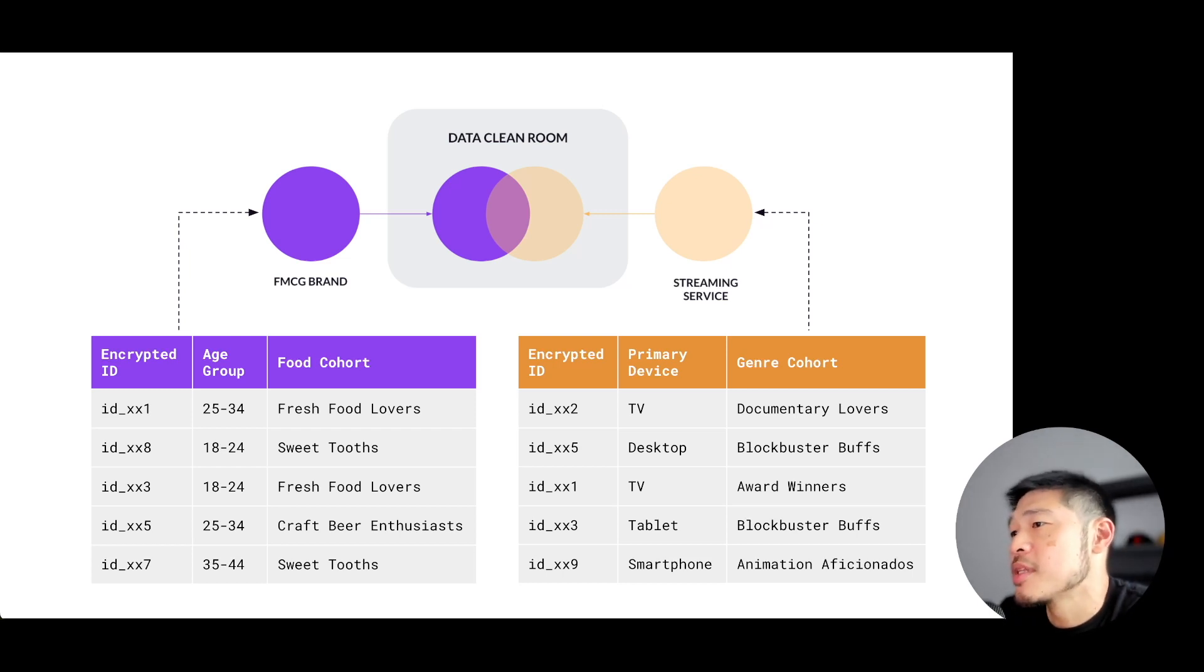And then the streaming service, their data set, which is the right side table with the orange headers, includes the same encrypted customer ID in the same format as that of the FMCG brand. The user's primary device and the programming genre that they've been bucketed into.